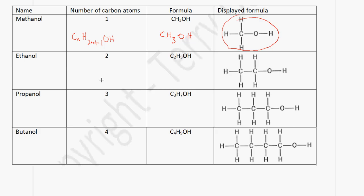In the case of ethanol, we have two carbon atoms. The formula becomes C2H5OH — using 2×2+1=5 — and this is the displayed formula for ethanol.